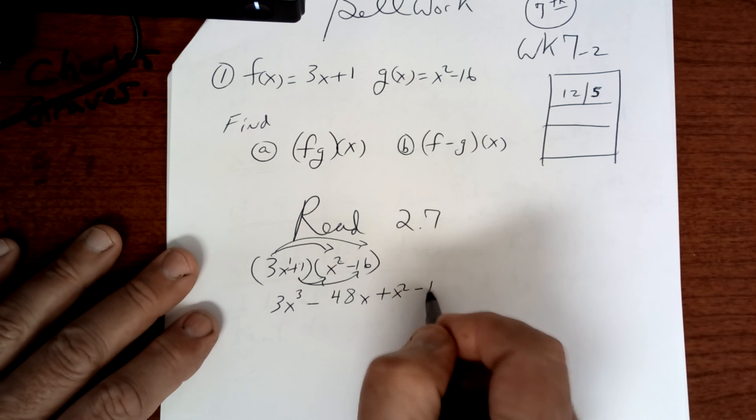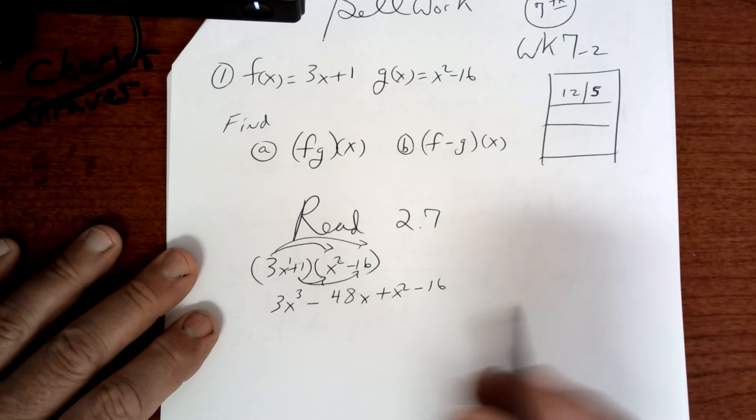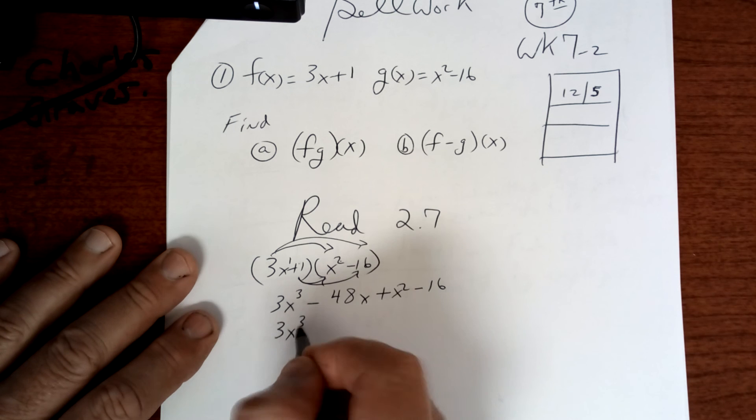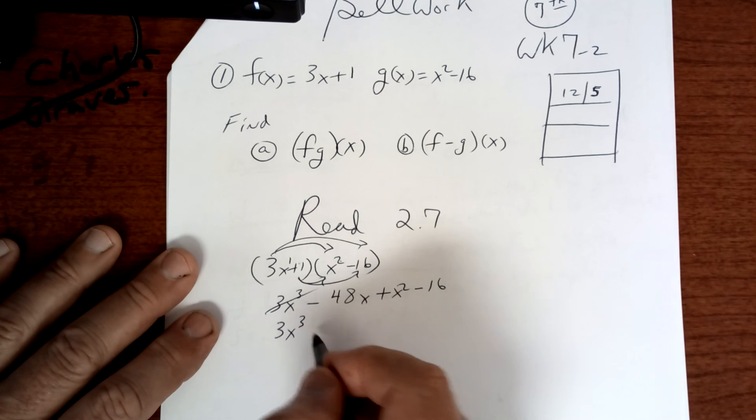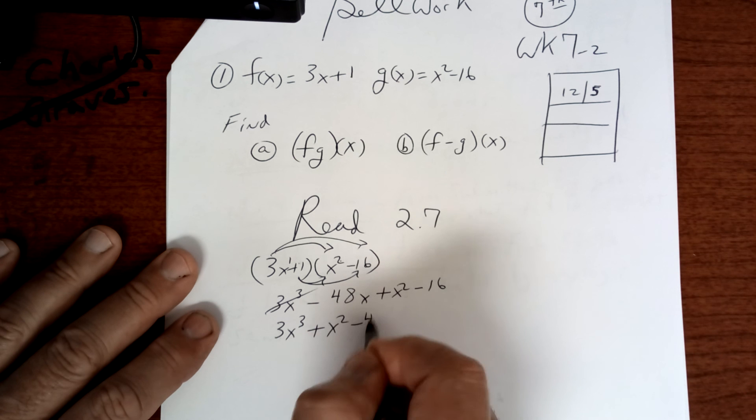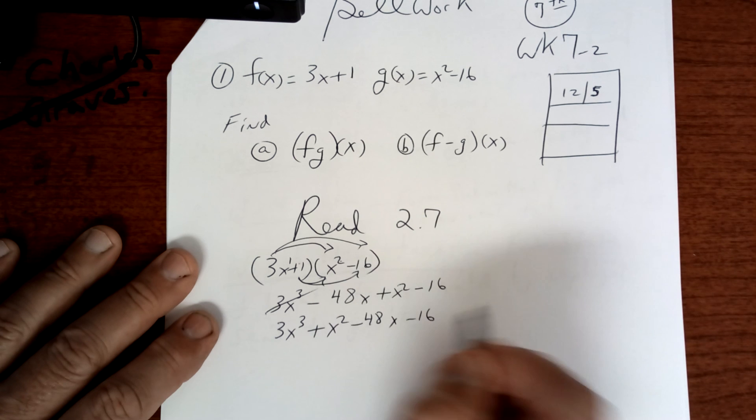And then you're going to combine like terms. So, it's going to be 3x to the third. Scratch it. Plus x squared minus 48x minus 16. And we're done.